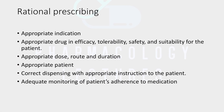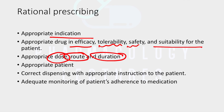Rational prescription means you should prescribe medicines according to appropriate indications. Whatever drug you prescribe should be efficacious, tolerable, safe, and suitable to the patient, because all these things vary according to patients. You need to make a clinical judgment by examining the patient and then choose the medicine. It should be at an appropriate dose, route, and duration. It should also be appropriate to the patient, considering different co-morbidities.